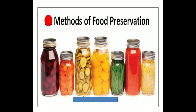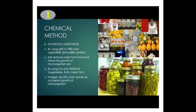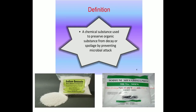Now let us study some common methods to preserve food in our homes from the attack of microorganisms. The first method is the chemical method. Salts and edible oils are common chemicals used to check the growth of microorganisms, and these are also called preservatives. Preservatives are chemical substances added to food, food products, beverages, and other products to prevent decomposition by microbial growth or by undesirable chemical changes.